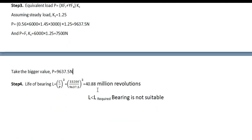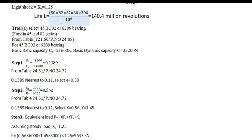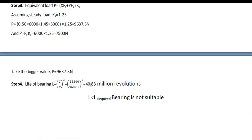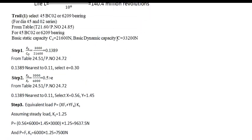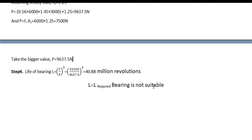The obtained is 140. We have obtained is the first value is 140.4 million revolution. Now obtained is 40.88, which is lesser than this value. Therefore, the bearing is rejected.